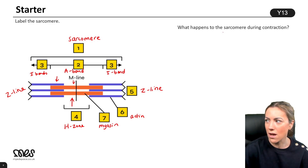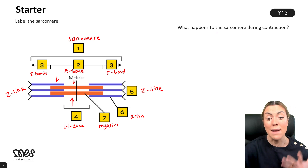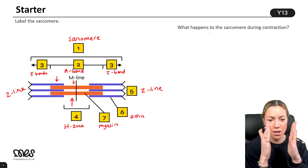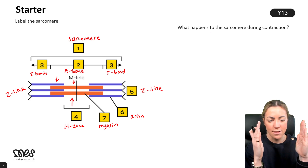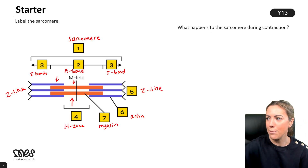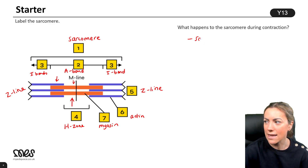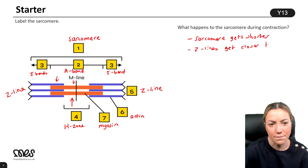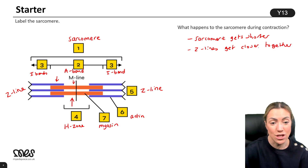When the sarcomere or muscle fibre contracts, what happens to the sarcomere? The sarcomere gets shorter and the Z-lines get closer together. Thinking about what happens to the I-bands, the H-zone, and the A-band can be a little bit more confusing.